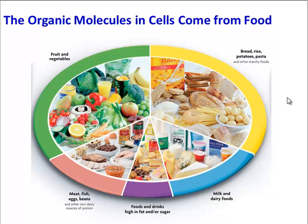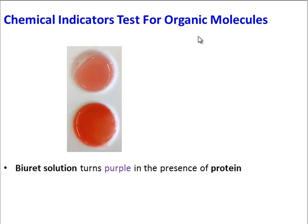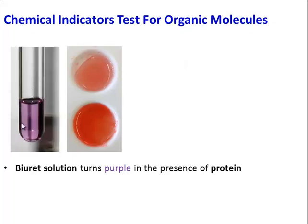So what we're going to be doing is testing foods from different food groups and seeing which molecules are in each type. In order to do this, we're going to use chemical indicators to test for the organic molecules. The first indicator we're going to use is Biuret solution — we saw this in our urinalysis lab. Biuret solution will turn purple in the presence of protein.